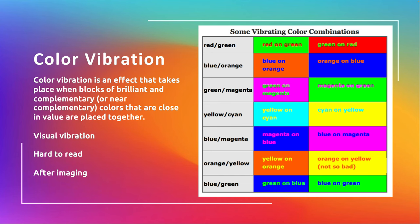This is where we get some color reactions — often referred to as color vibration. This more often than not happens with complementary colors, though it can happen with similar complementary colors or just very vibrant colors. Basically, color vibration is an effect that takes place when you have complements or near-complements together, and sometimes it literally makes your eyes vibrate. When they're placed close together or on top of each other, you get literal visual vibration. Often they're hard to read, so when using text with these colors, they can be difficult to read.